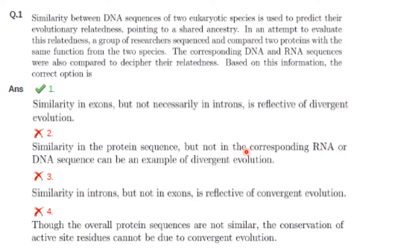Divergent evolution involves a common ancestor, so there will be similar protein, DNA and RNA sequences. Similarity in exons means protein sequences will also be similar, since proteins are made of amino acids whose sequence is determined by mRNA, which is in turn determined by the DNA sequence. So similarity in exons but not necessarily in introns is reflective of divergent evolution. Option 1 is the answer.